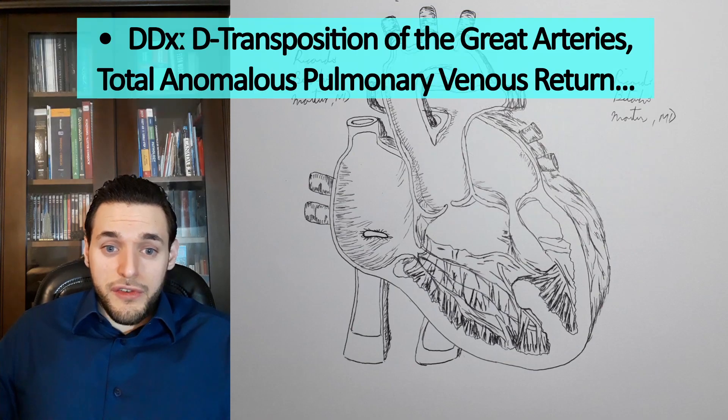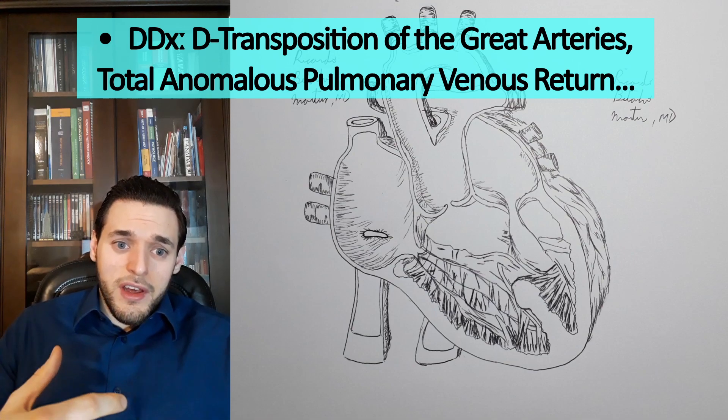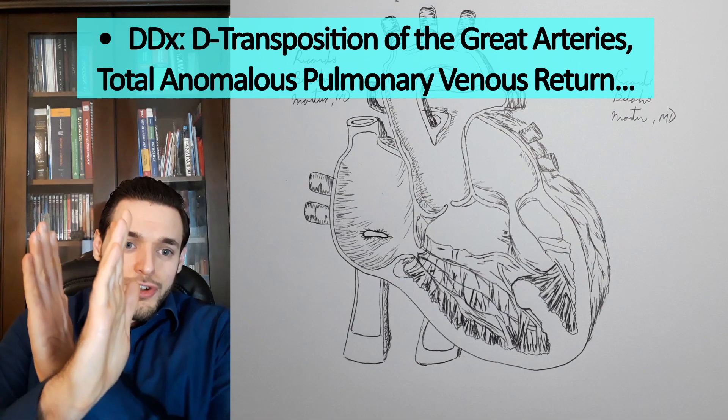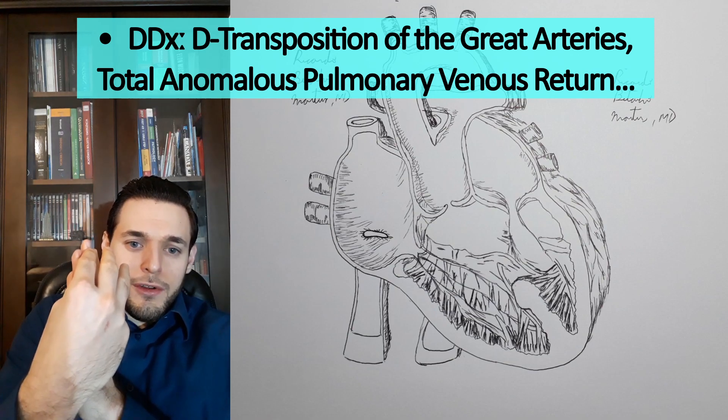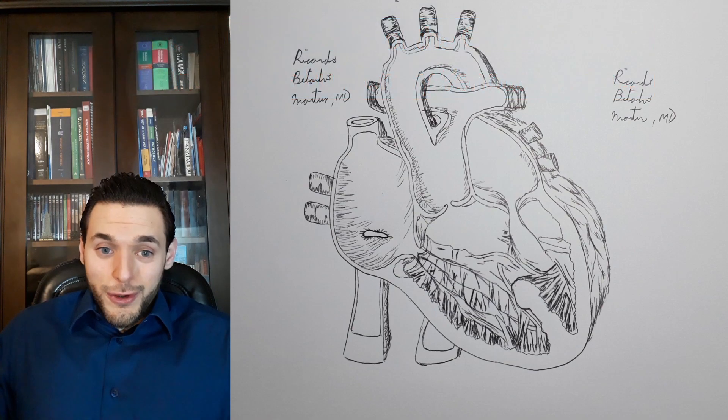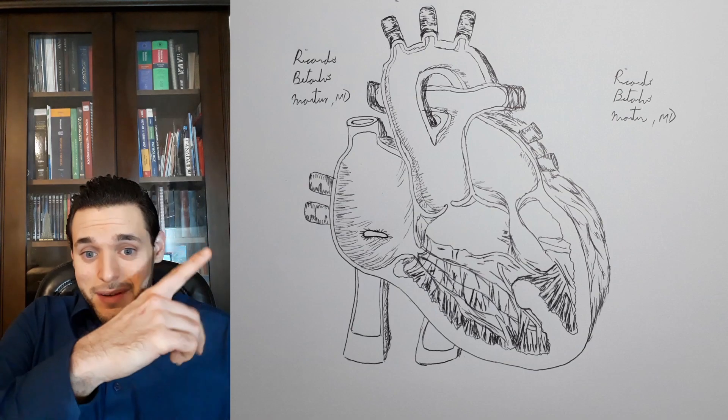Finally, its differential diagnoses include mostly other cyanotic congenital heart diseases, such as D-transposition of the great arteries or total anomalous pulmonary venous return. If you want to contrast it with these other diseases, make sure to click the links on the screen.